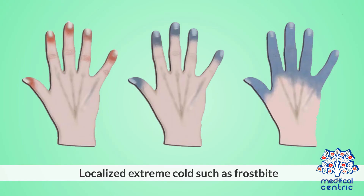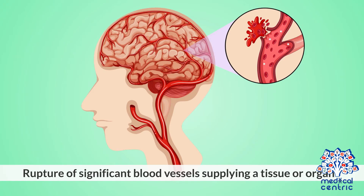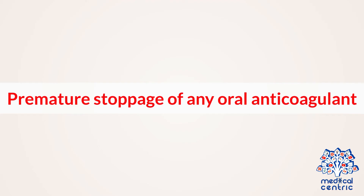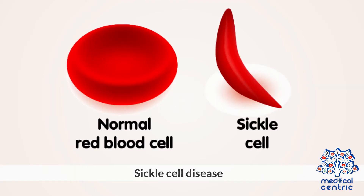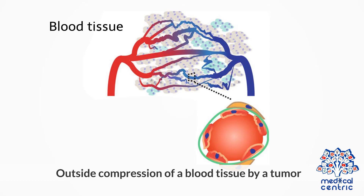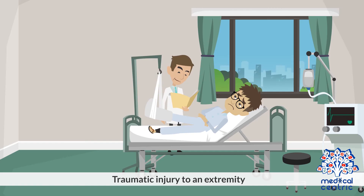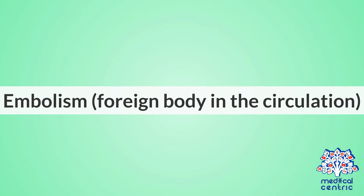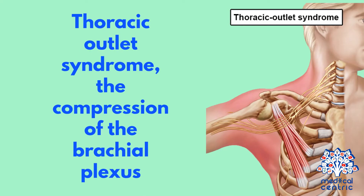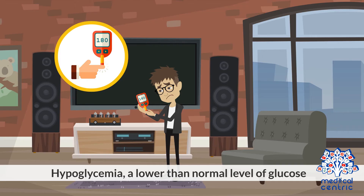Additional causes include: localized extreme cold such as frostbite; rupture of significant blood vessels supplying a tissue or organ; premature stoppage of any oral anticoagulant; sickle cell disease; outside compression of a blood vessel by a tumor; hypotension; radiotherapy; traumatic injury to an extremity; embolism or foreign body in the circulation; thoracic outlet syndrome; compression of the brachial plexus; and hypoglycemia, a lower than normal level of glucose.